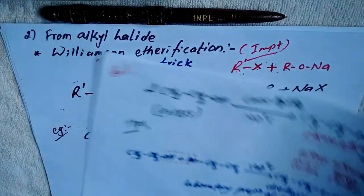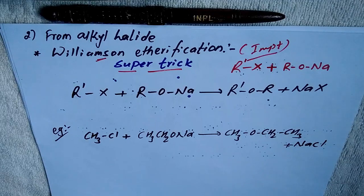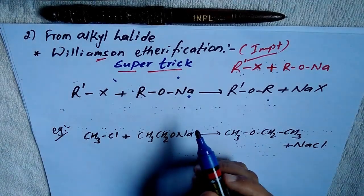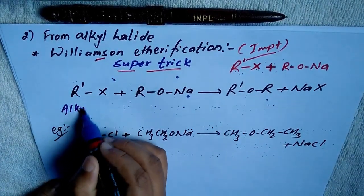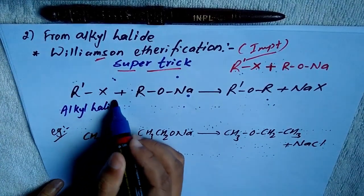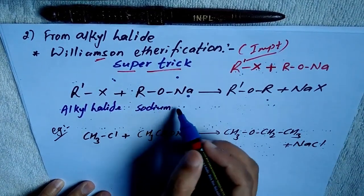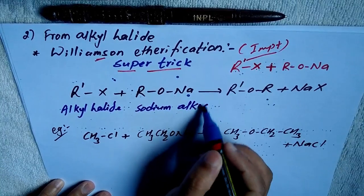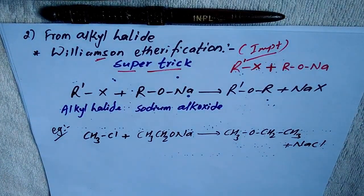The next preparation of ether is from alkyl halide. The most important reaction is Williamson etherification. In Williamson etherification, we use an alkyl halide reacting with sodium alkoxide.